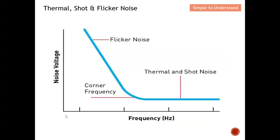This diagram shows frequency versus noise voltage. At low frequency, flicker noise dominates — it is the main influencer at low frequency. As you can see, the noise decays with frequency: the higher the frequency, the lesser the flicker noise, until we reach the corner frequency. After the corner frequency, flicker noise becomes less influential, and at high frequency, mainly thermal and shot noise dominate.